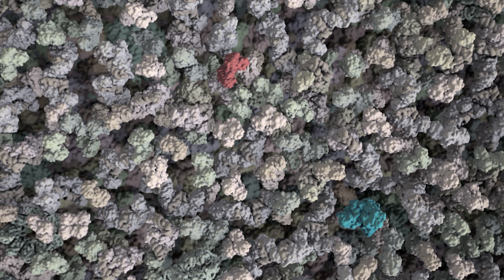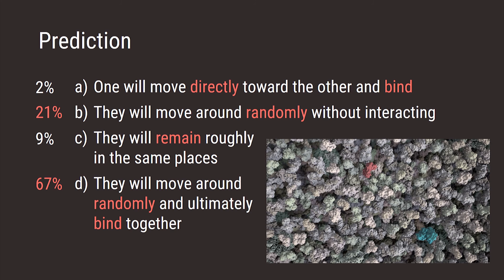But in another study we showed students this still image, the first frame of an animation, and asked what they thought would happen next between the red and the blue molecules. Interestingly, almost 90 percent of them predicted random motion. Only two percent thought that the red and blue molecule would move directly toward each other and bind. Could it be that just seeing a picture of a crowded environment changes people's conceptions about movement?